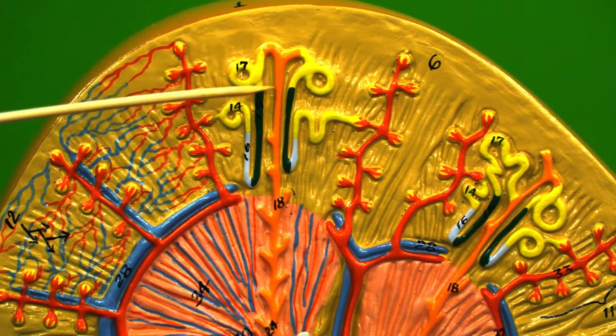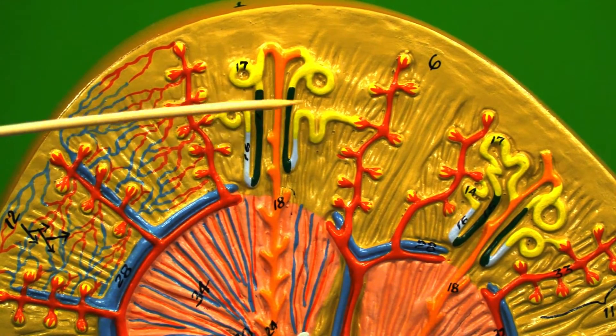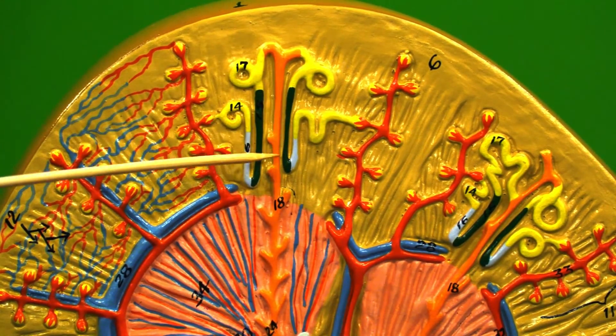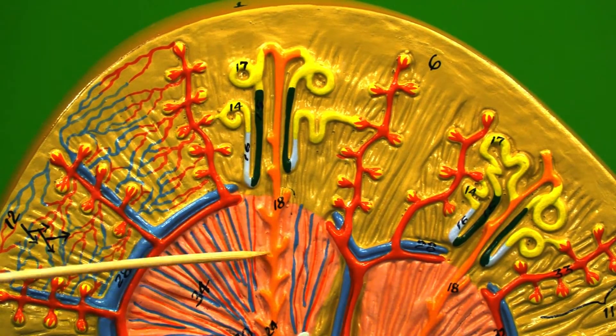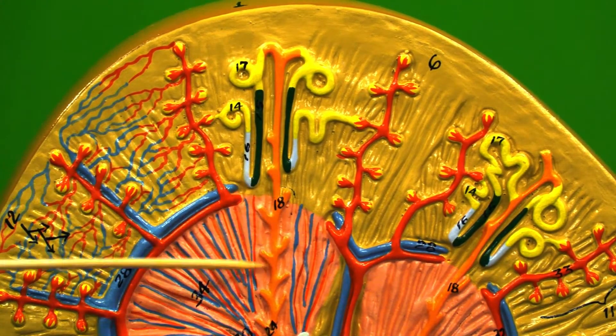After the distal convoluted tubule we come into the collecting duct or collecting tubule. Many nephrons attach to one collecting duct which runs all the way down through the pyramid and into the minor calyx.